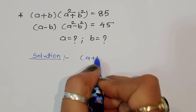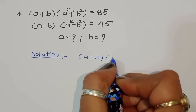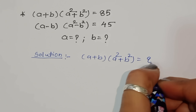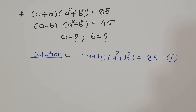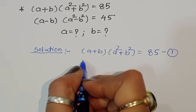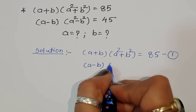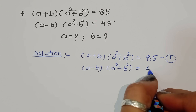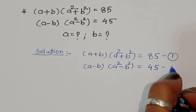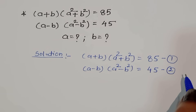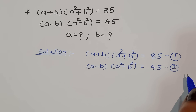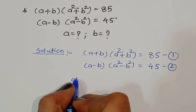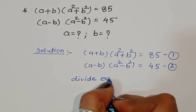First equation: (a + b)(a² + b²) = 85 — this is equation number 1. Next one: (a - b)(a² - b²) = 45 — this is equation number 2. Now we can divide equation 1 by equation 2.